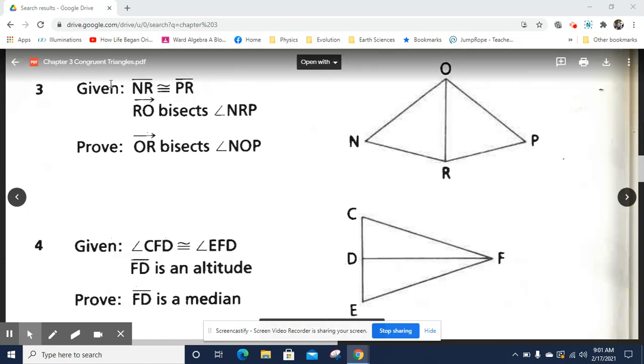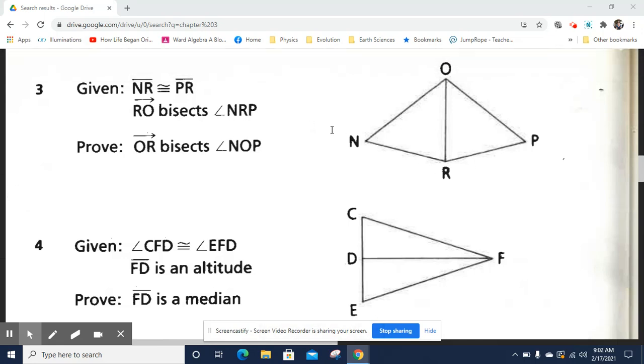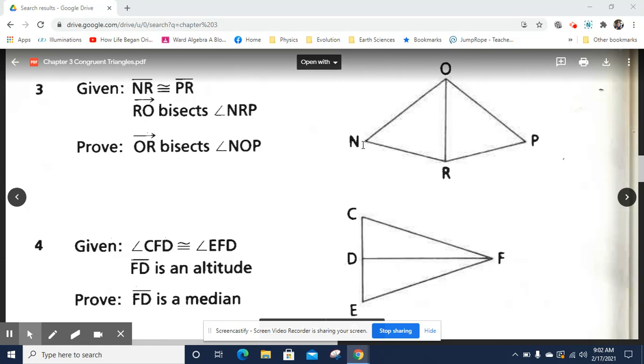We have been given some information: NR is congruent to PR. We've been told RO bisects angle NRP, and we're supposed to prove that OR bisects NOP. So I'm going to give you some hints that should get you where you need to be so you can do this.